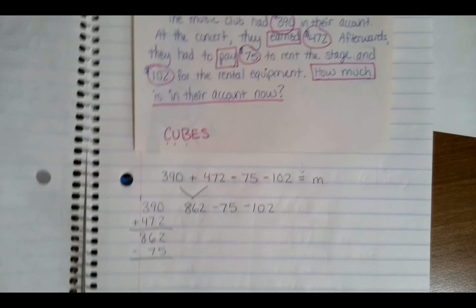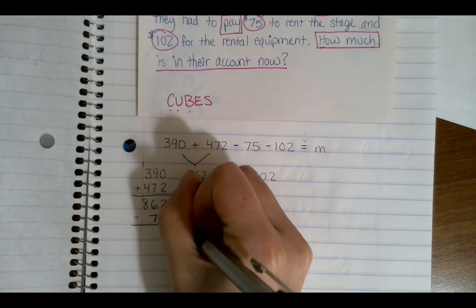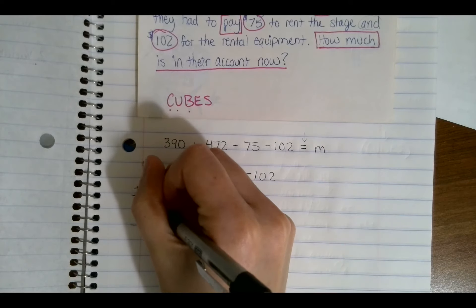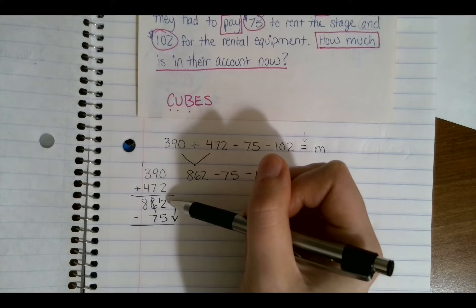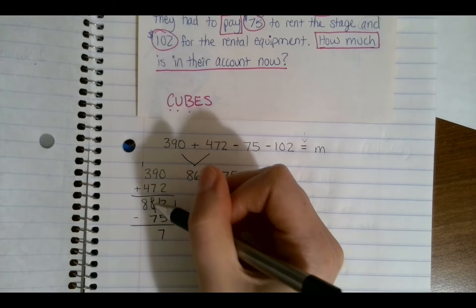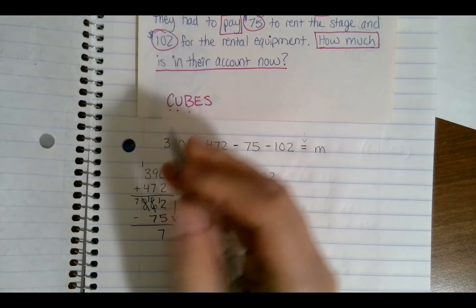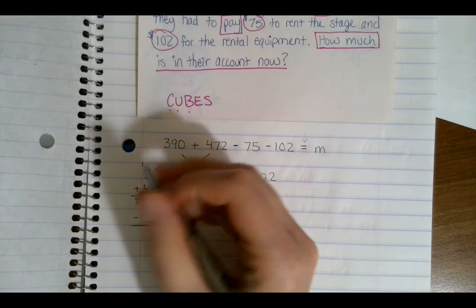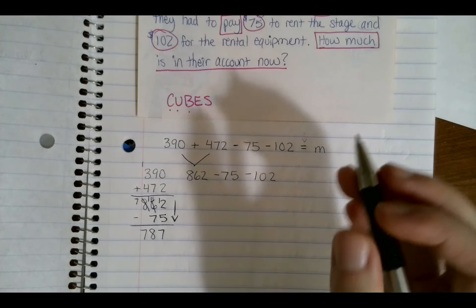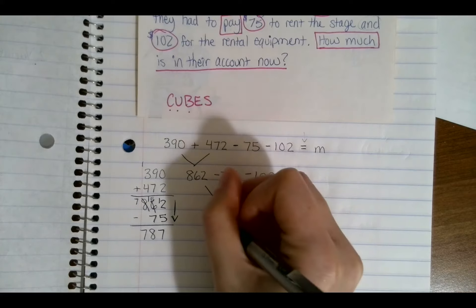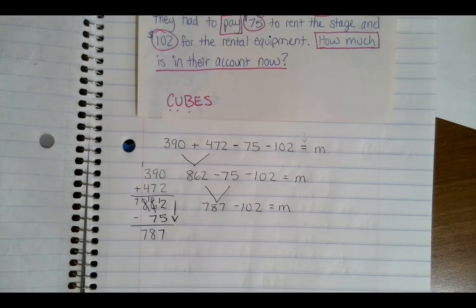Remember, subtraction does not have the commutative property — it's a one-way street. For 862 minus 75: 2 minus 5 I can't do, so I borrow from the tens — now I have 12 ones, take away 5 is 7. I have 5 tens left, can't take away 7, so borrow from hundreds: 15 tens minus 7 is 8, and 7 minus nothing is 7. So 862 minus 75 equals 787. This is why it's called multi-step — I'm not just adding two numbers and being done.